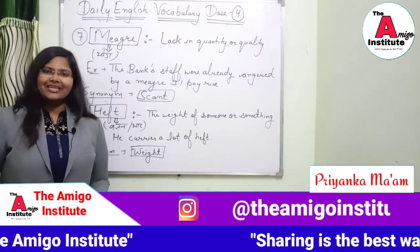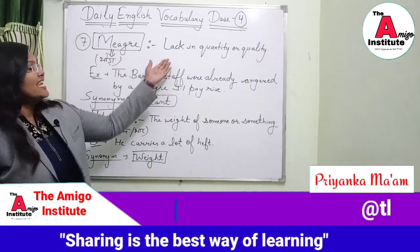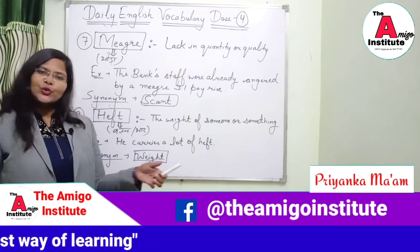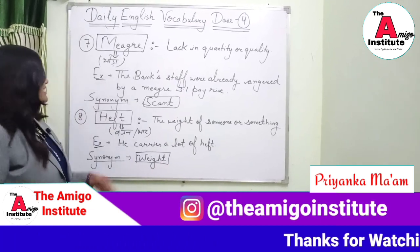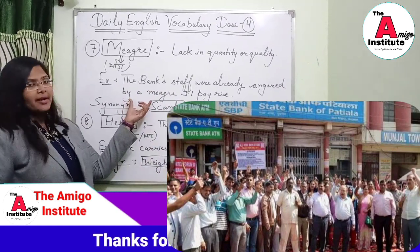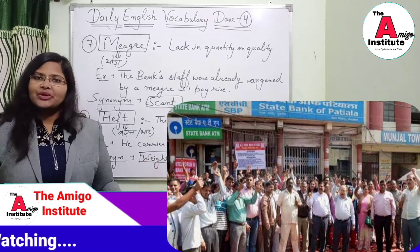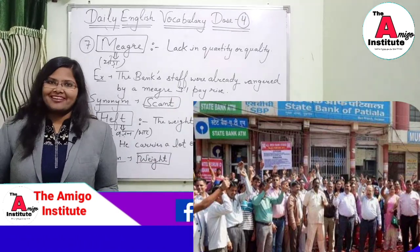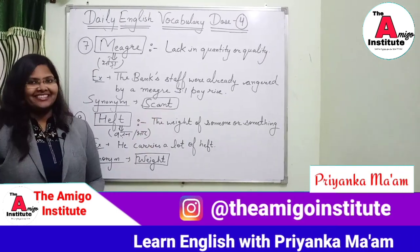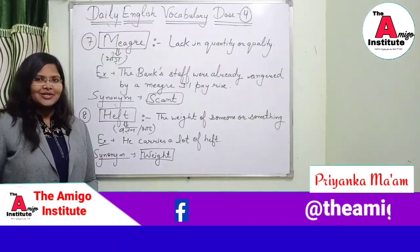The next vocab word is meager. Meager means lack in quantity or quality. In Hindi, it is thoda. Its example: the bank staff were already angered by a meager 3.1% pay rise — thodi pay rise honi ki wajay se bank staff bohot zyada gusse me tha. Its synonym is scant — it is very important.